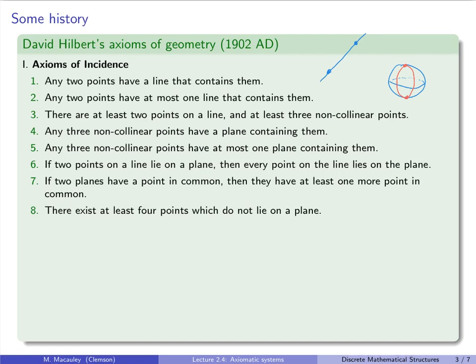Three, there are at least two points on a line, and at least three non-collinear points. So if you have a line, you can always find at least two points on that line. And you can always find a third point that is not on that line.